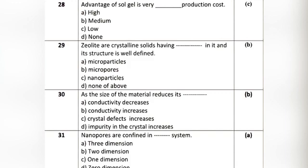Question 5: Zeolites are crystalline solids having — in their structure that is well defined. Option A: micro particles. Option B: micro pores. Option C: nanoparticles. Option D: none of the above. The correct answer is Option B: micro pores.